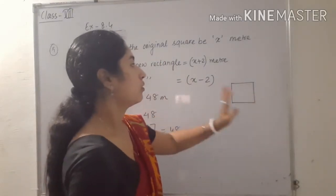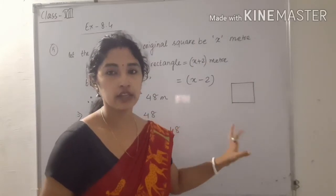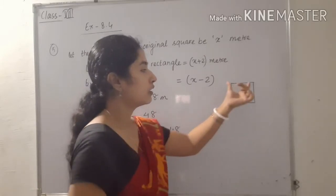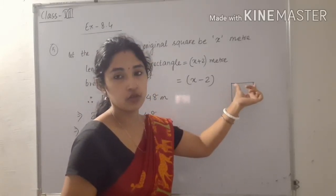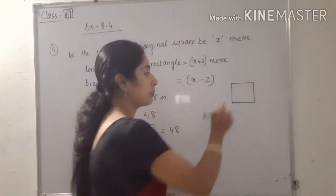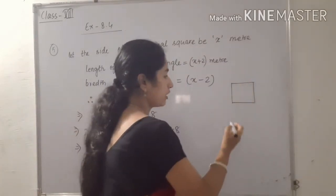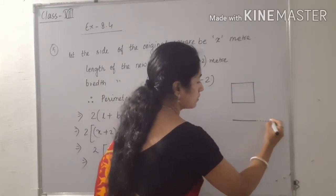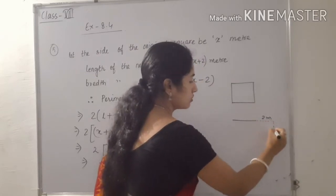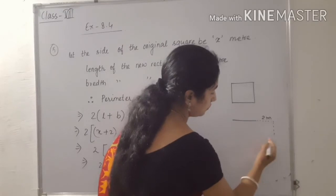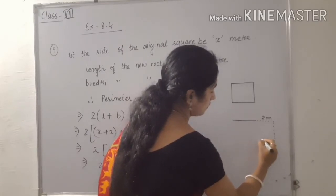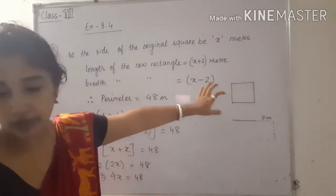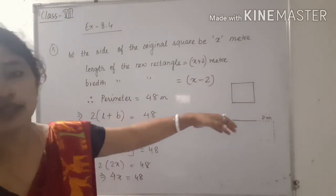The next question involves a square whose side we do not know. We increase one side by 2 metres and reduce the adjacent side by 2 metres to form a rectangle. The perimeter of this new rectangle is 48 metres. Let the side of the original square be x metres. Then, after the changes, length of the new rectangle is x plus 2, and breadth is x minus 2.